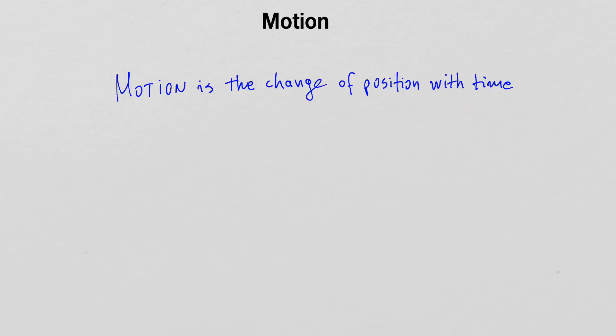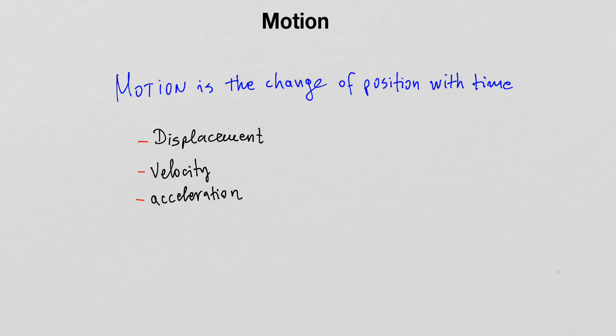There are a number of quantities associated with the motion of objects that we need to define in this lecture. Here is the list of those quantities: first we have displacement, velocity, and acceleration of motion, and then we also have distance and speed of the motion.